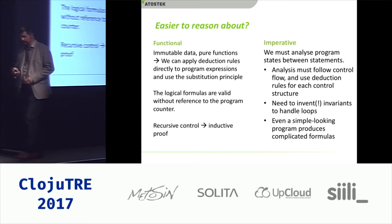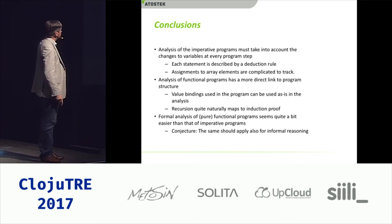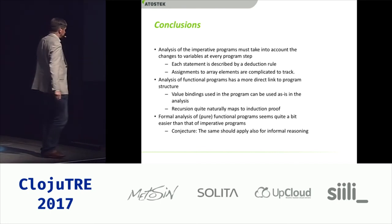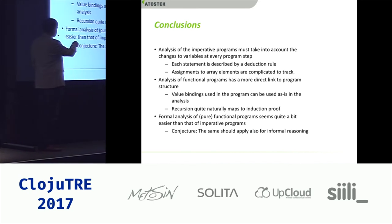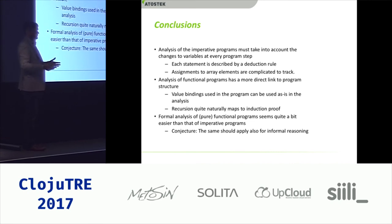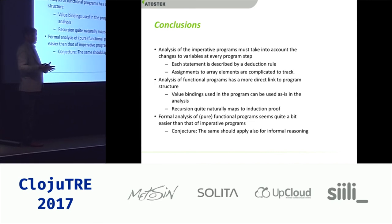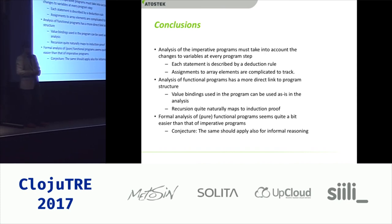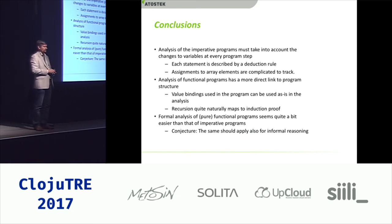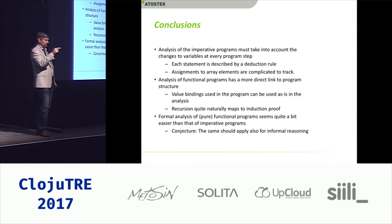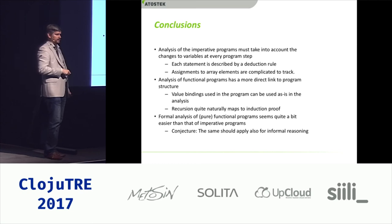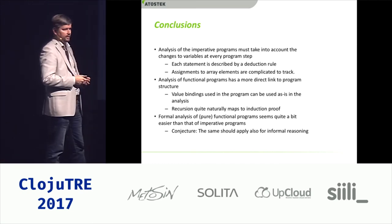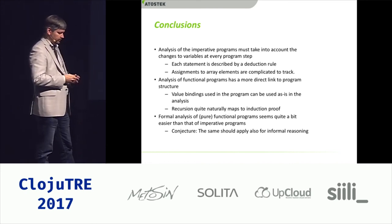One of the hardest parts is really inventing invariants. So that's my final conclusion or conjecture: since formal analysis — mechanically verifying step by step that the program does what we think it does — is much more complicated for imperative programs, I'm making a wild guess that this also applies to informal reasoning. By informal reasoning I mean looking at a piece of code and asking: what does this do? Where's the bug? You're tracing how input transforms through the code until you find the error. This is what you do every day when programming.